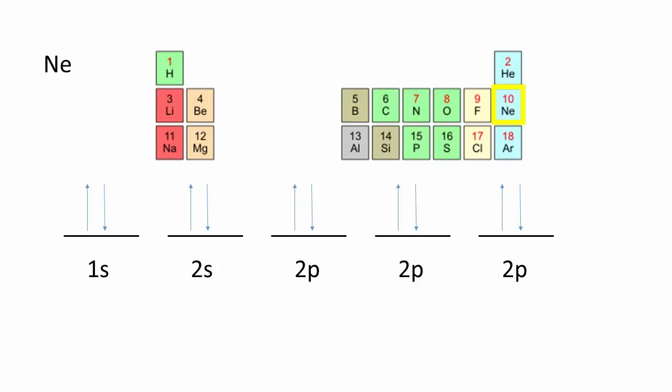If we were to continue on to the third period, sodium to argon, we would fill the 3s and 3p orbitals as we did the 2s and 2p orbitals. Finally, the entire periodic table could be done, with d orbitals and f orbitals, following the same principles we just outlined.